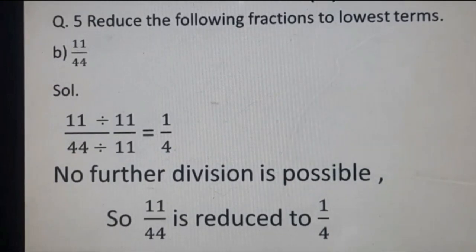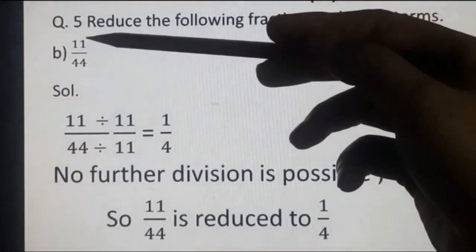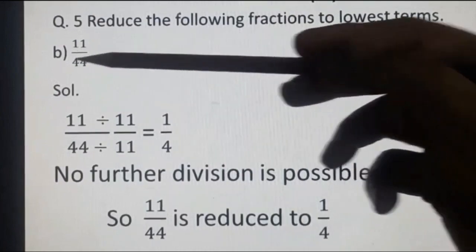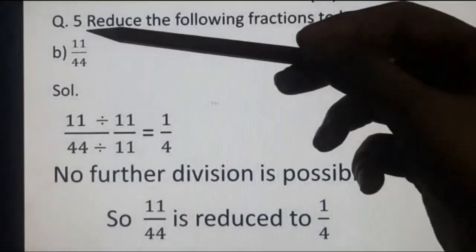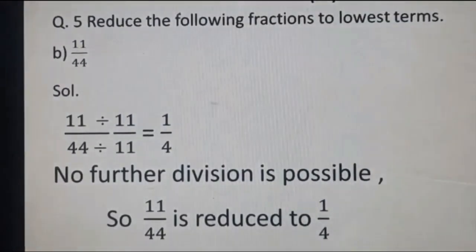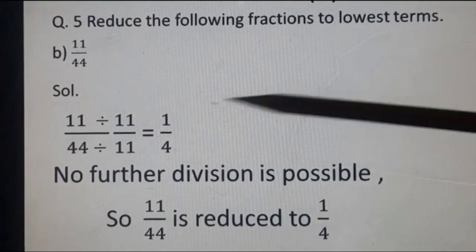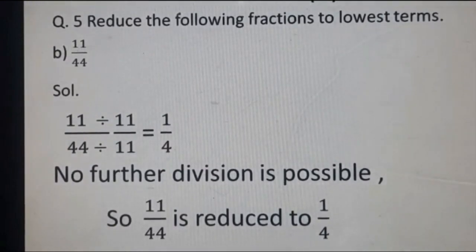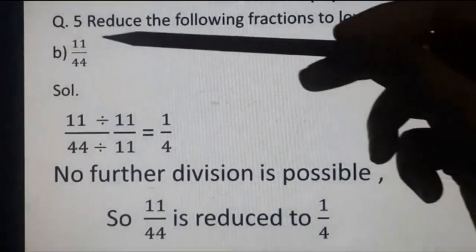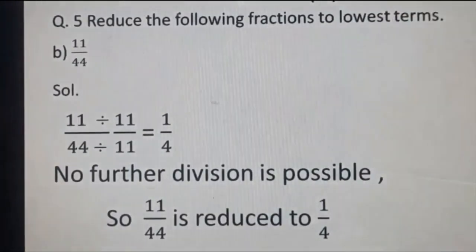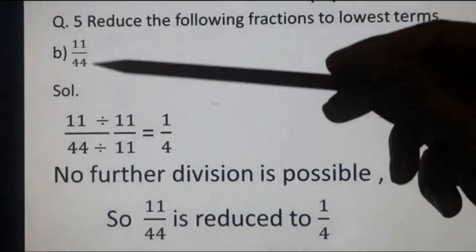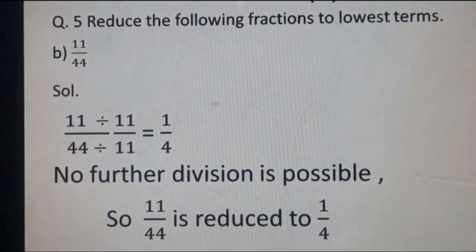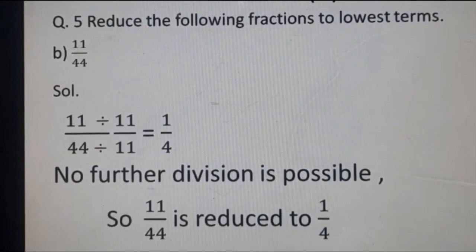In this method, we saw that 11 and 44 both appear in the table of 11, so we divided by 11. The second method says find the HCF of 11 and 44, which is also 11, then divide by HCF. You can take any method — the answer will be the same for both.